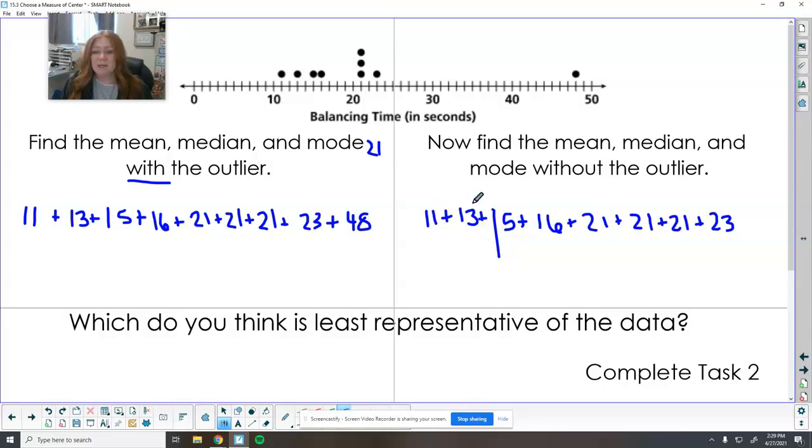This time I'm dividing by one, two, three, four, five, six, seven, eight to find the mean, the fair share. Now for the median, 11 matches to 23, 13 to 21, 15 and 21. So I'm left with 16 and 21 in the middle. I need to find the fair share of 16 and 21. I add these up, and if it's an odd number, I just need to add a zero. See how many times two goes into 37, and that is your median. And then our mode is still 21.